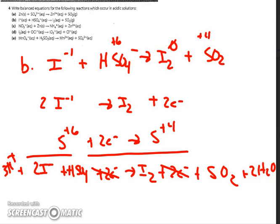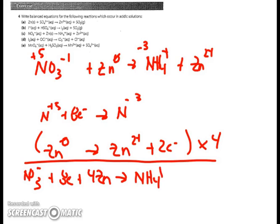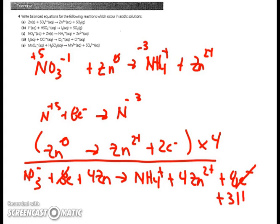In letter C, for the first time I have to multiply one of my equations to balance the electrons gained and lost. Now when I add up the equations, I've got NO3- and eight electrons, zinc has become four zinc. On the other side, I've got NH4+ and four zinc ions and eight electrons. Canceling out the electrons, I need oxygen on the right, so I add three waters. I've got 10 hydrogen, so I add 10 hydrogen ions to the left side — giving a balanced equation.